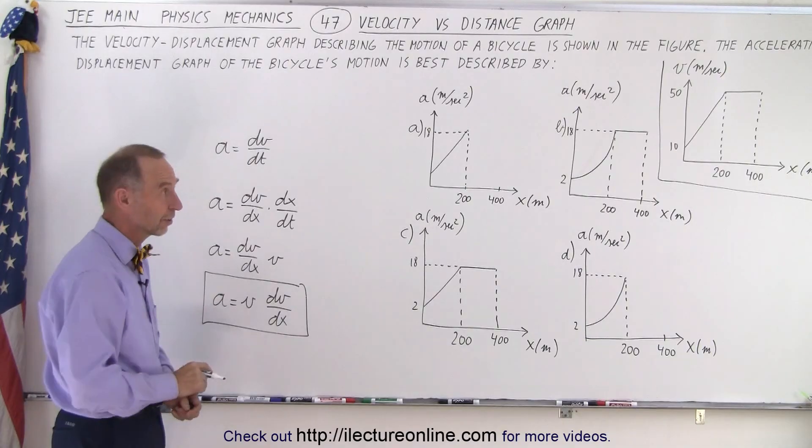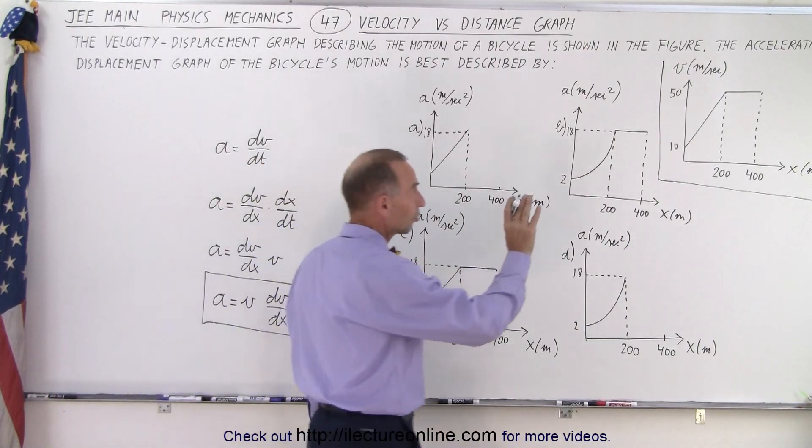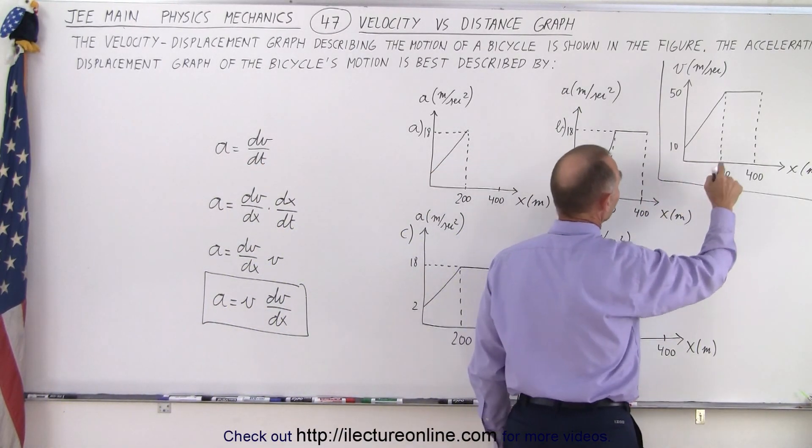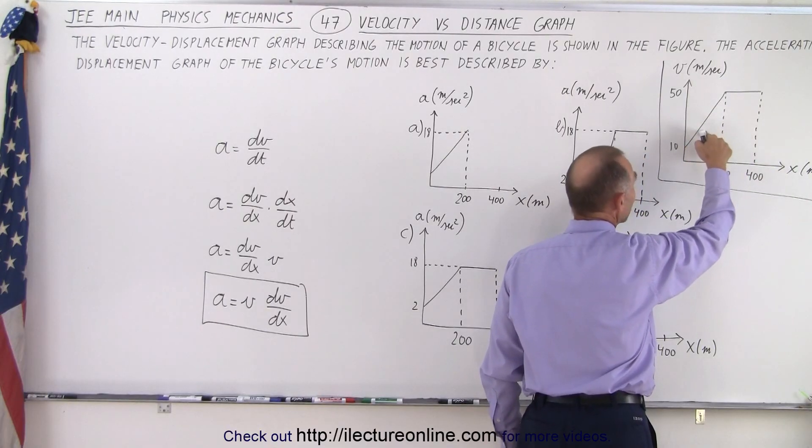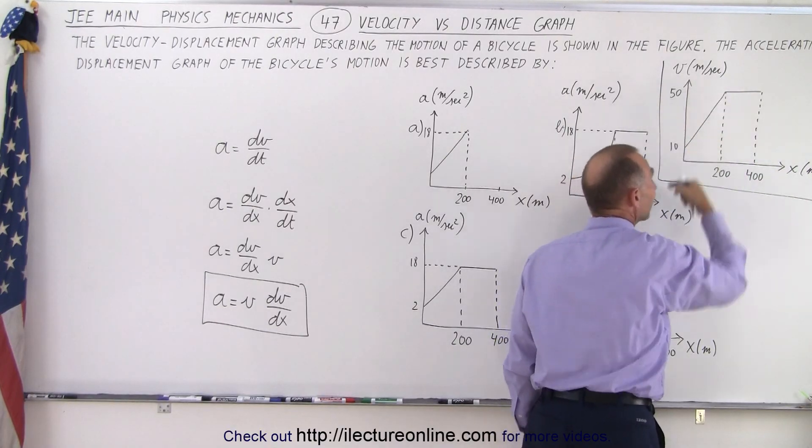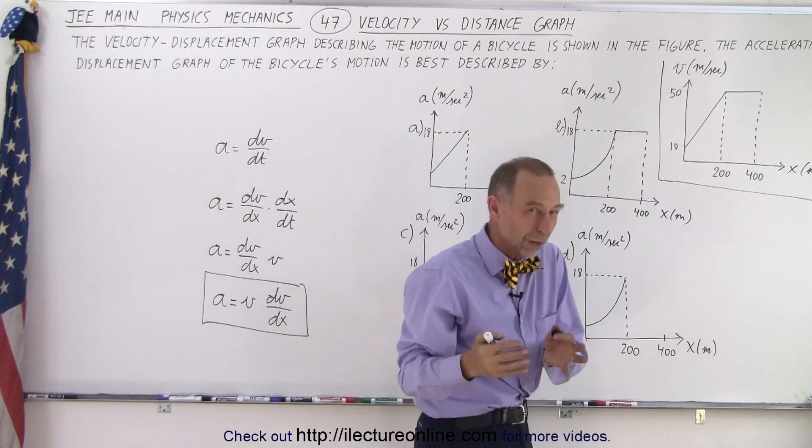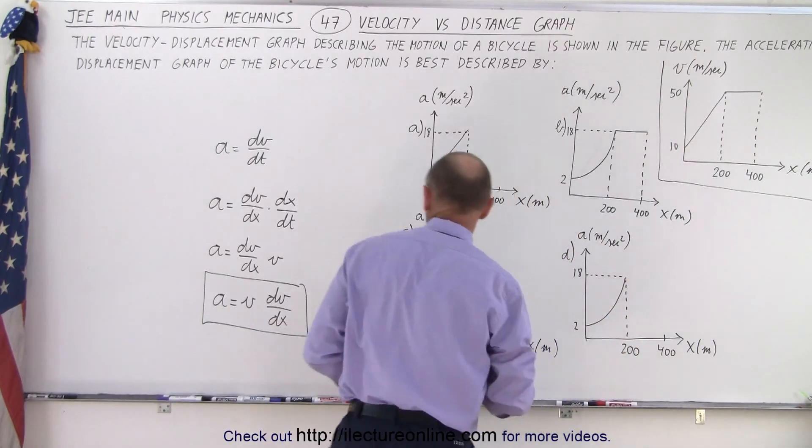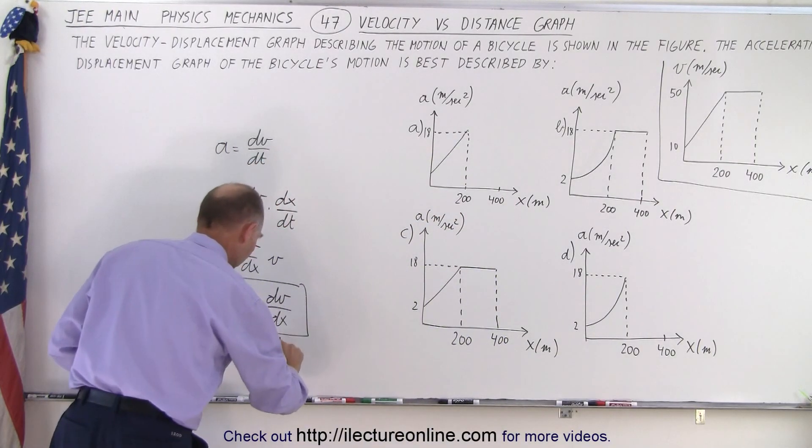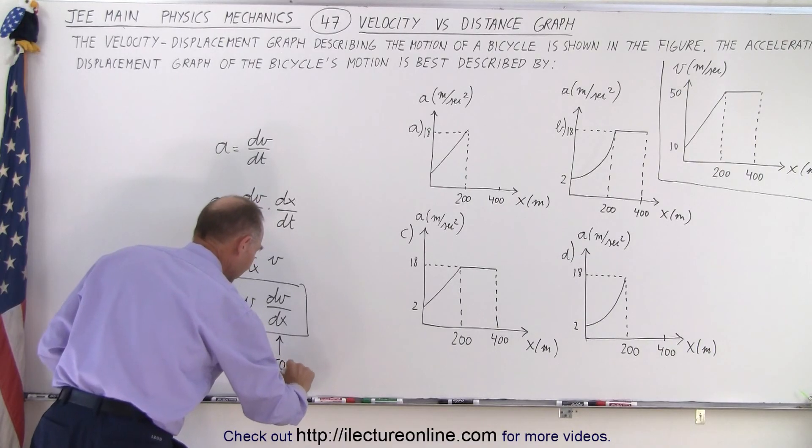Now, let's look at dv dx. Let's go look at this graph right here. We realize that this is v versus x, so dv dx is the slope of this graph and notice the slope is a straight line. It is constant, which means that this quantity right here is a constant.